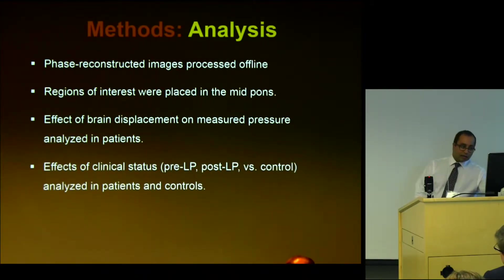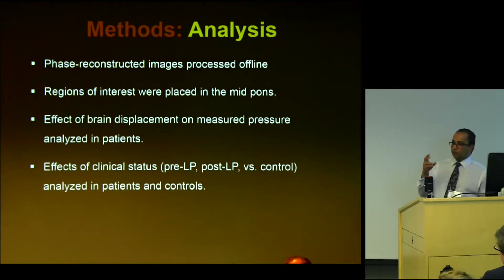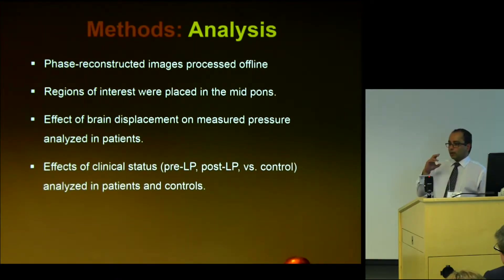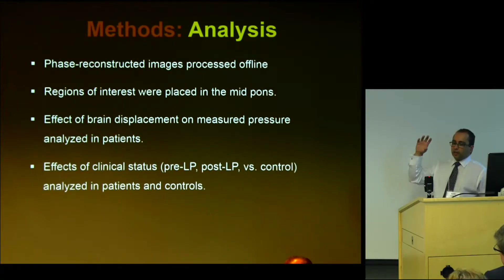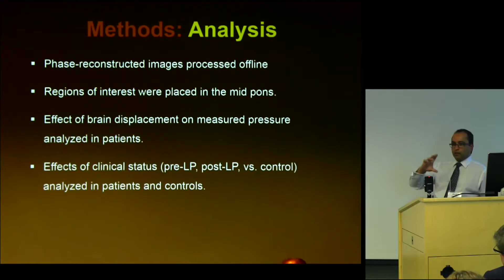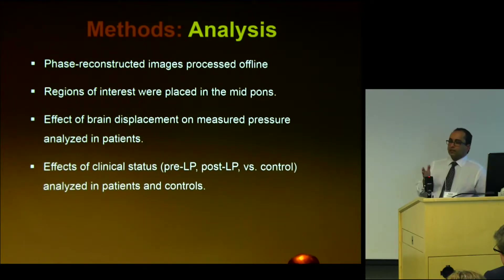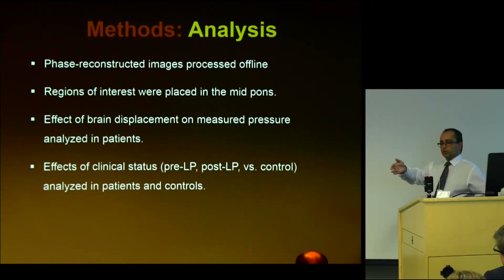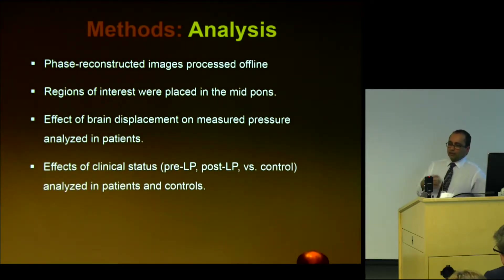We reconstructed images offline and placed regions of interest within the central pons — a relatively large structure that from prior studies we knew tended to have a lot of pulsatility. If we look supratentorially, there tends to be not much pulsatility, particularly in the head-to-foot direction, whereas posterior fossa structures — the pons and upper cervical spinal cord — tend to pulsate much more craniocaudally. We focused on that structure and looked at the effects of being pre-lumbar puncture, post-lumbar puncture, or being a control, and the effects of pressure on the measured displacement using DENSE.